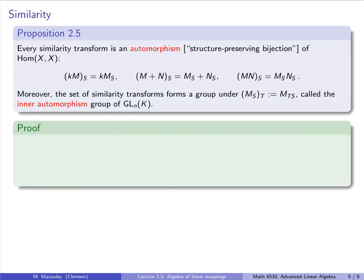Every similarity transformation is an automorphism — an endomorphism that is also bijective, i.e., a structure-preserving bijection of the set of endomorphisms. It is structure-preserving in the sense that conjugating kM gives k times the conjugate of M; conjugating M+N gives the sum of the conjugates; and conjugating MN gives the product of the conjugates.